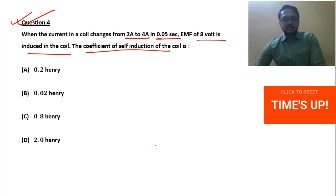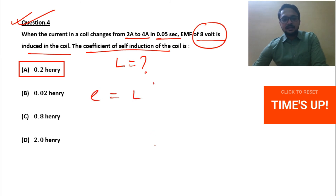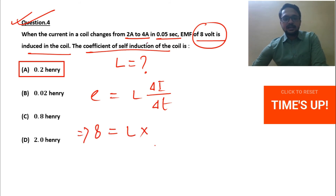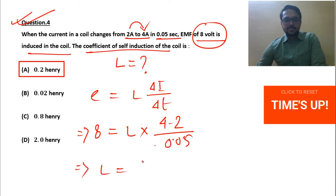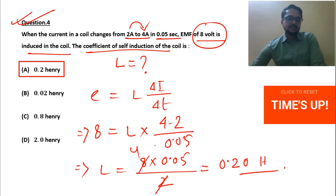The correct option is A — 0.2 henry. We use the formula e = L·ΔI/Δt. EMF is given, so: 8 = L × (4 − 2) / 0.05. Therefore L = 8 × 0.05 / 2 = 0.40 / 2 = 0.20 henry. So the correct answer is option A.